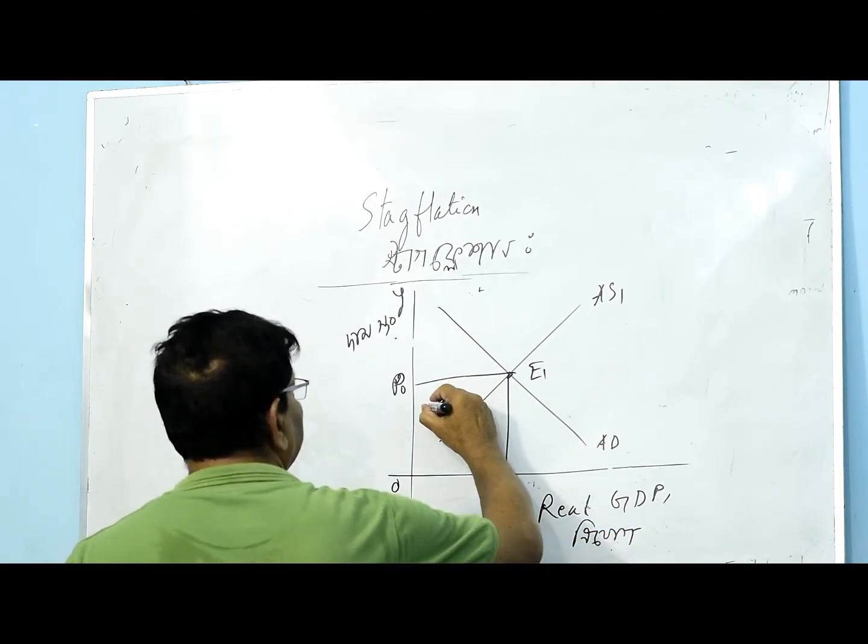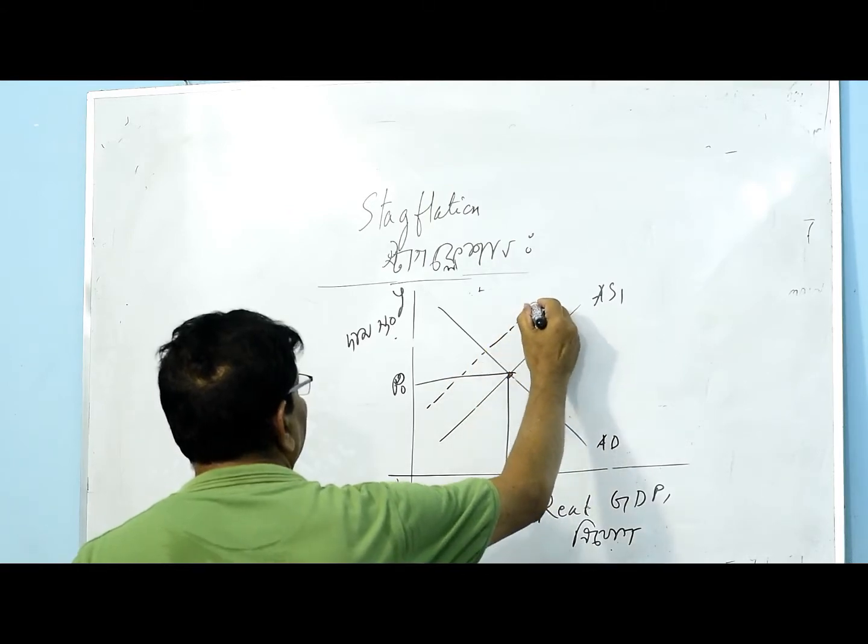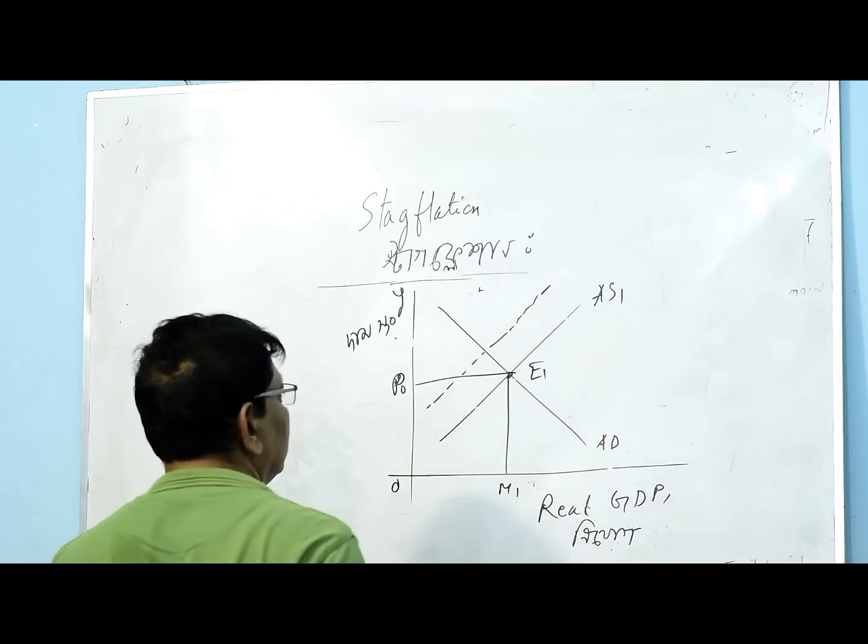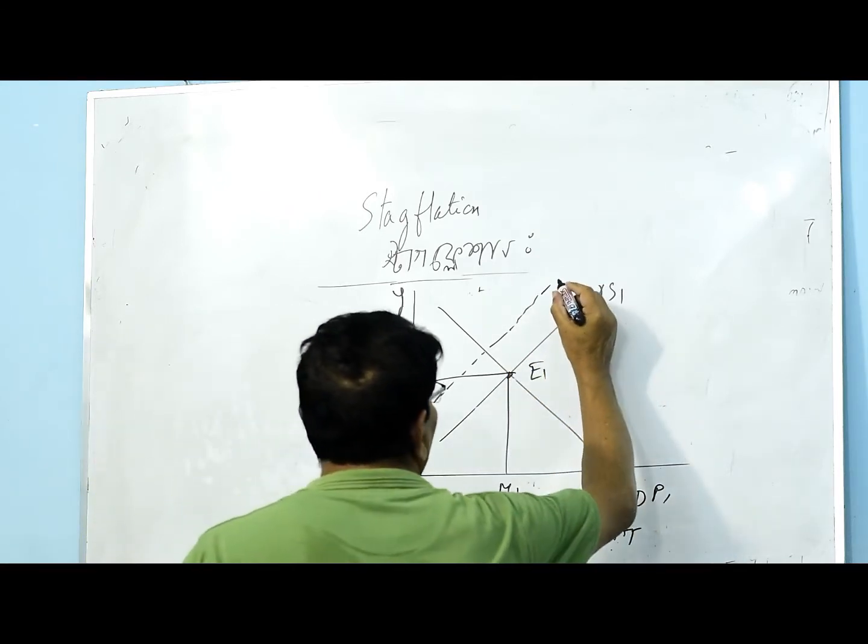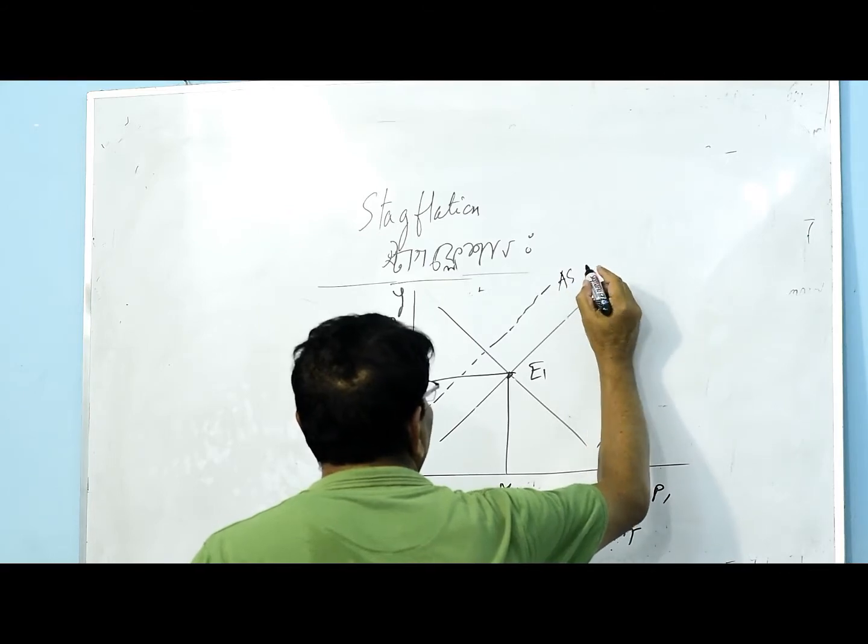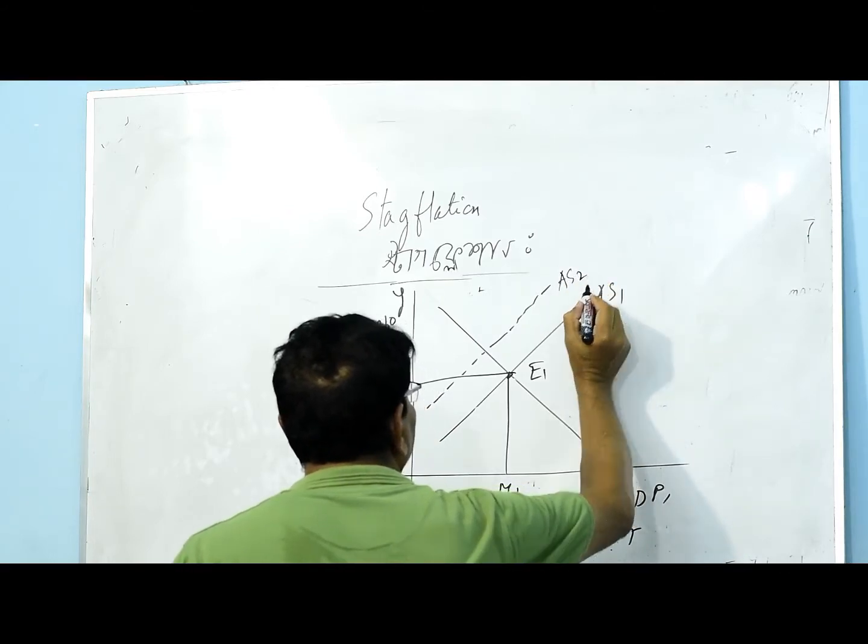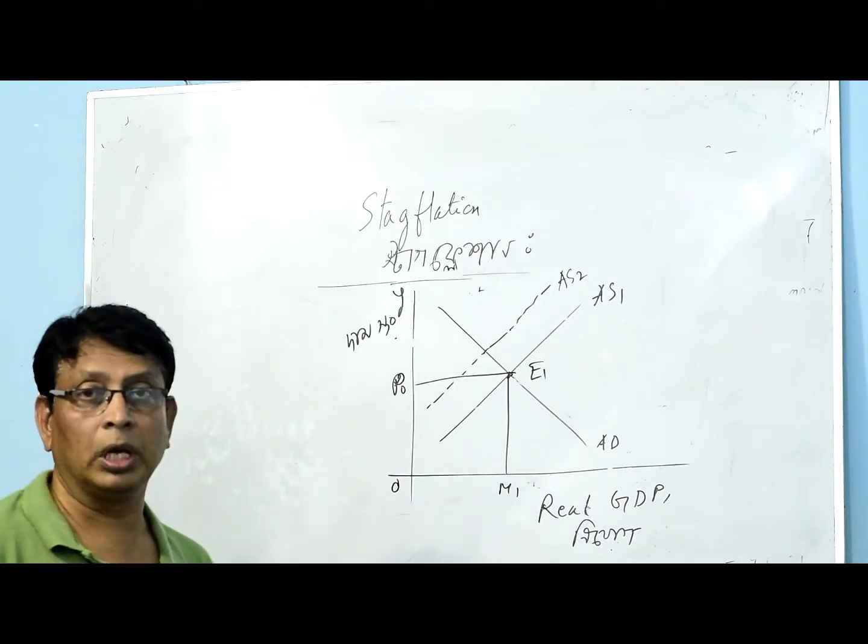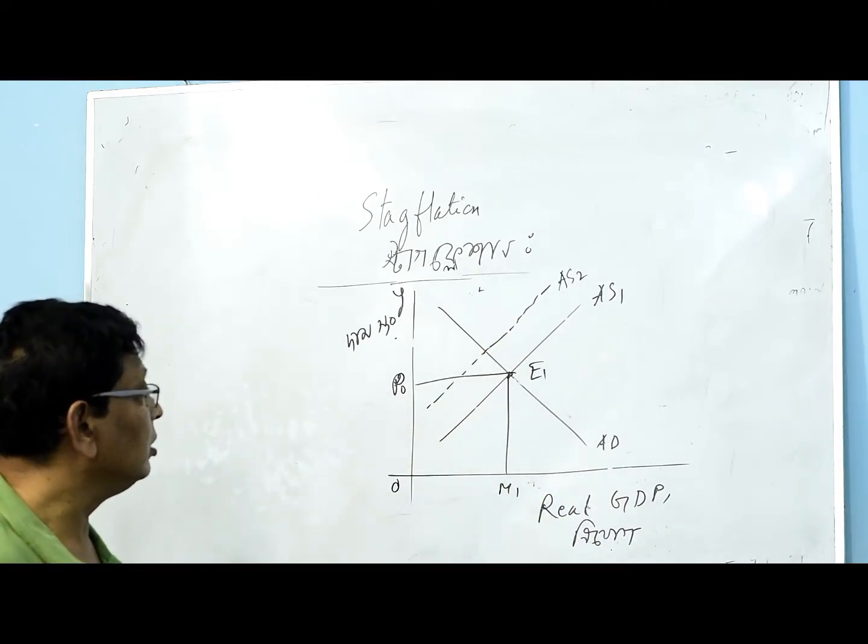We've seen the AS curve and now we have AS2. How do we look at AS2? What does AS2 mean? There's a shift. AS2 is the new aggregate supply.